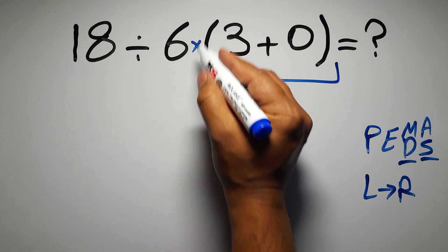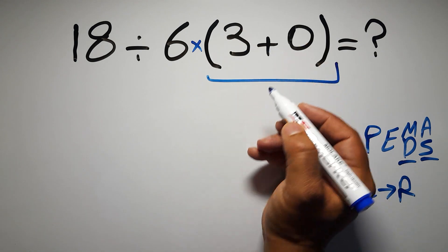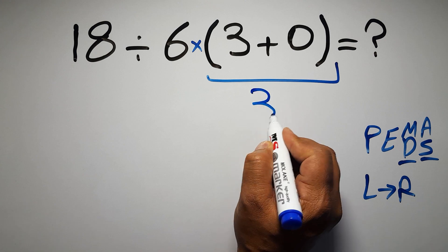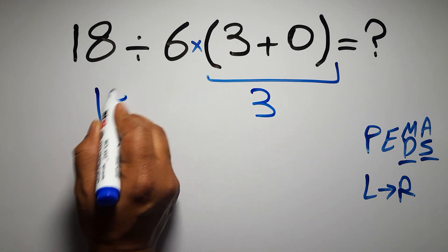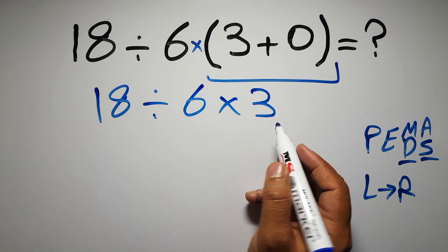So, first this parentheses. Inside this parentheses, we have 3 plus 0, which equals 3. So, 18 divided by 6 times 3.